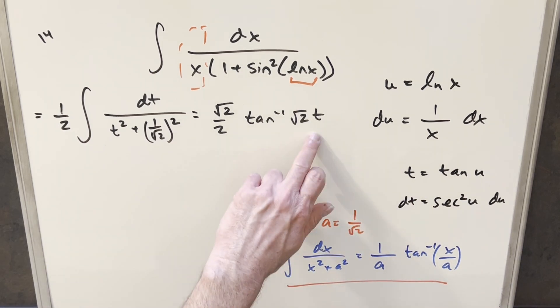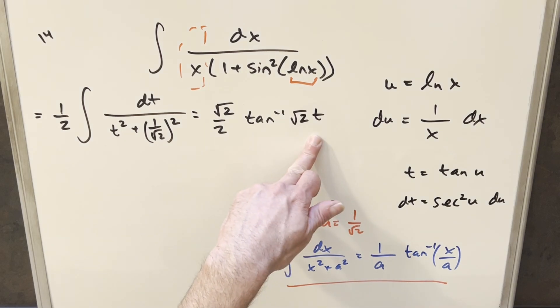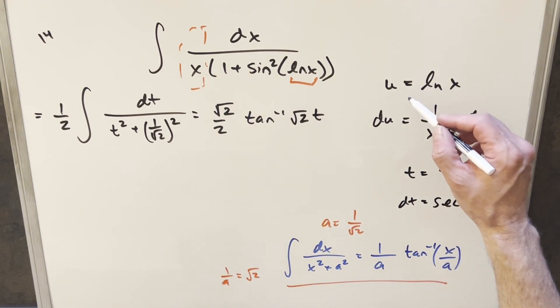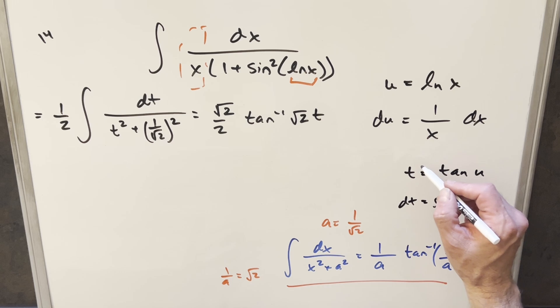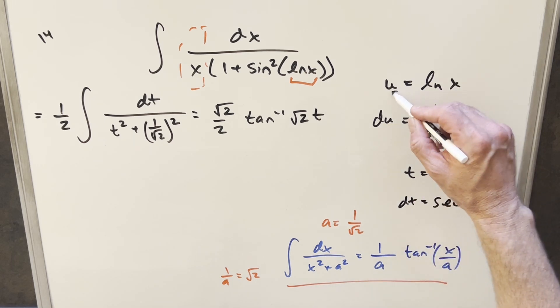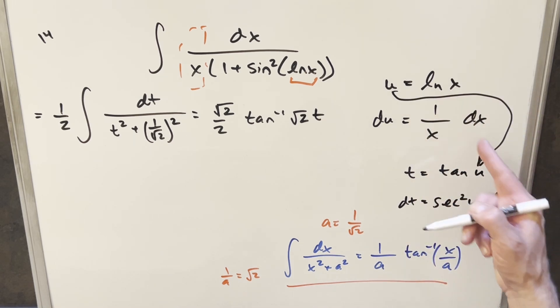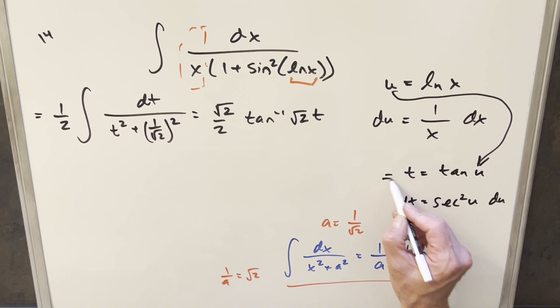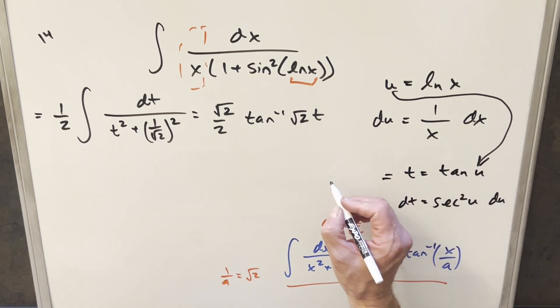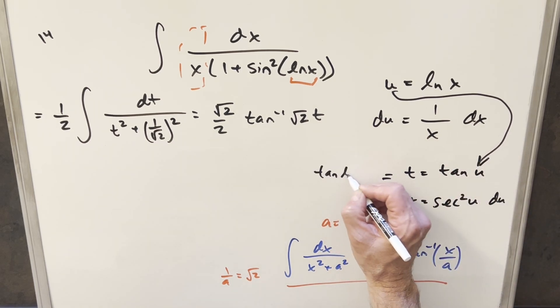But now we just need to back substitute in order to finish this off. We want to get it all the way back to x, and I made two substitutions. What I can do maybe to save a step is let's come down here. We've got our value for t, but then let's take our u value and get it back to x. So for t, I can substitute in for u and write this as tan lnx.